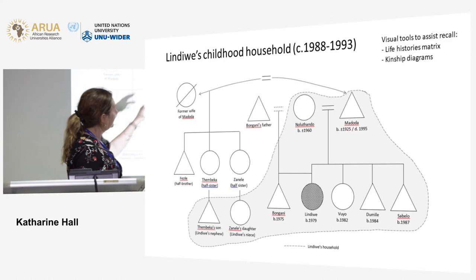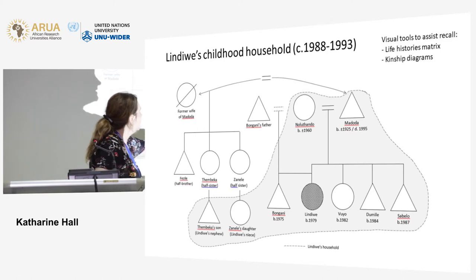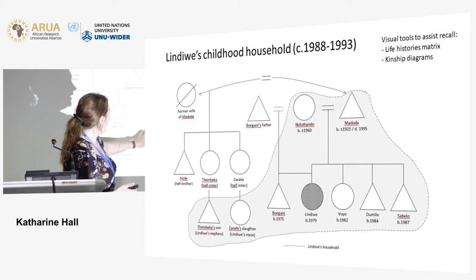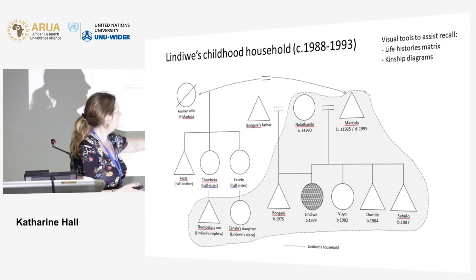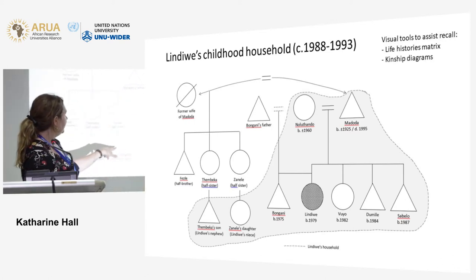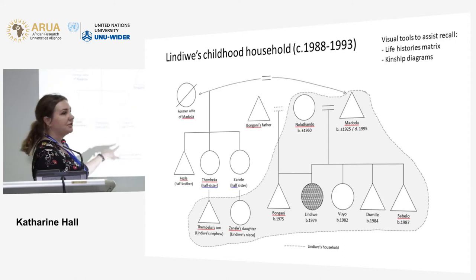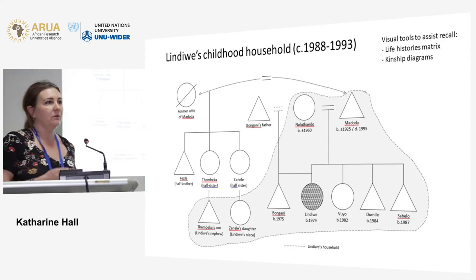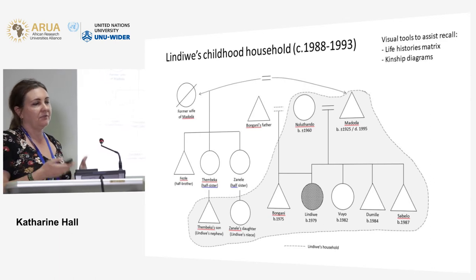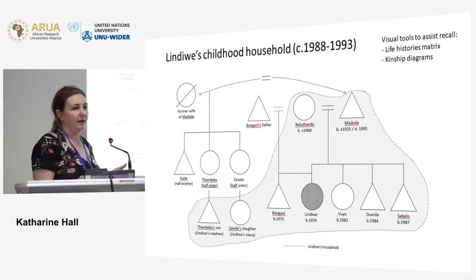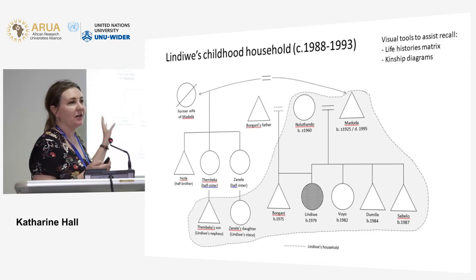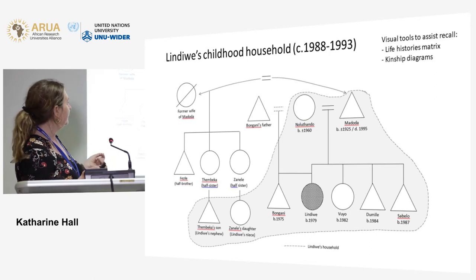We worked extensively with kinship diagrams. Here is a diagram of her childhood household — the second wife of her husband, her half-brother from a previous father, her other siblings, and her father's grandchildren from a former marriage. What we would call a complex, extended, three-generation household. But for her, it wasn't complex — it was quite normal in her environment.